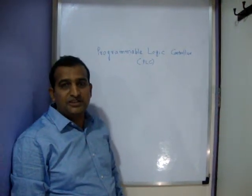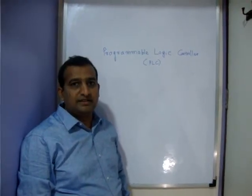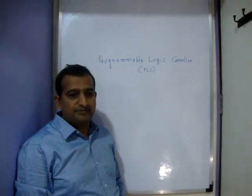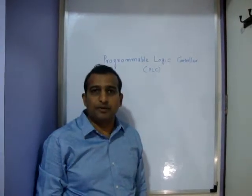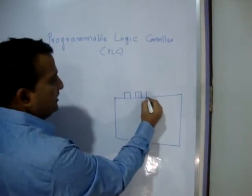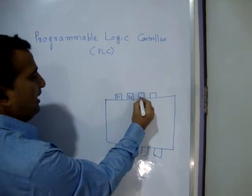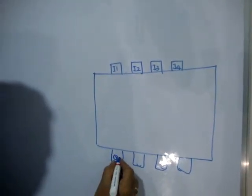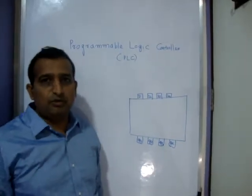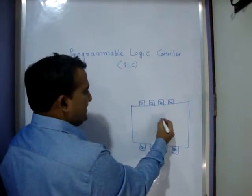Hello guys, today I am teaching Programmable Logic Controller. PLC has wide application in all machines. We'll see some basics of PLC and some programs. First of all, the PLC is nothing but a mini computer — it's a black box. There are some inputs: I1, I2, I3, I4, and outputs: Q1, Q2, Q3, Q4. Depending on applications, sometimes 2 inputs and 4 outputs, sometimes 100 inputs and 50 outputs.